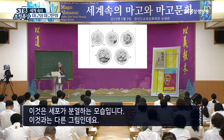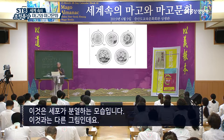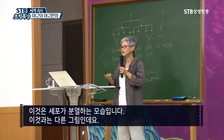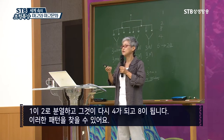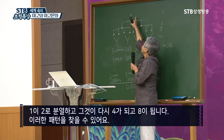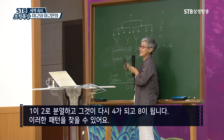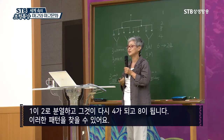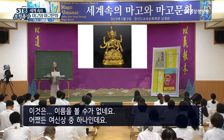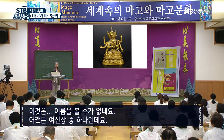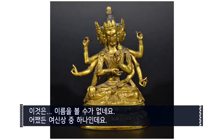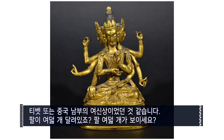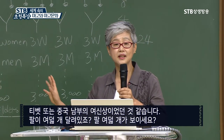And this is how cells divide: from one, dividing to two, it becomes four and eight. That's the pattern that is included. And this is one of the goddess figures — I cannot see the name of this one, but I think this could be from Tibet or South China somewhere. You see eight arms, right?